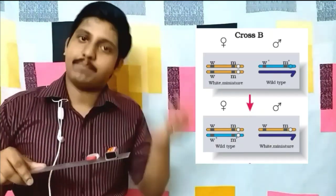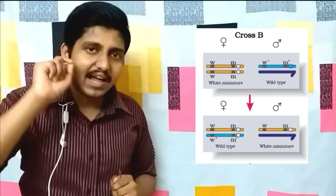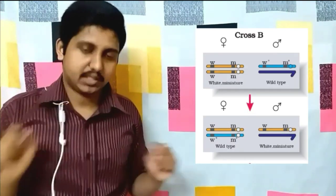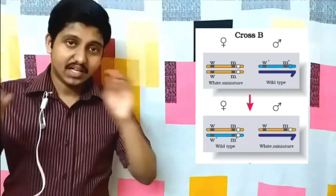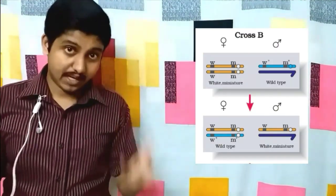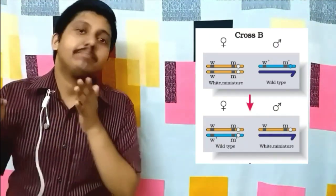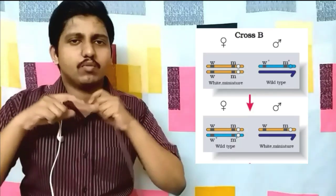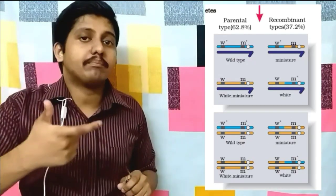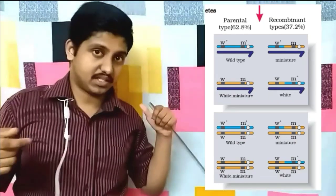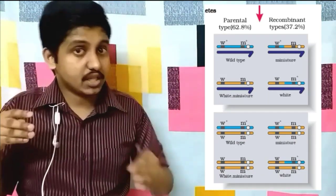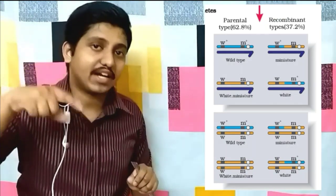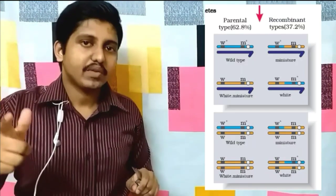In the second experiment, Morgan crossed white-eyed miniature-wing females with wild-type males having normal-sized wings and red eyes. After intercrossing, he obtained more recombinant individuals than in the previous cross. Parental combinations were still more frequent, but the proportion of recombinants had increased significantly.